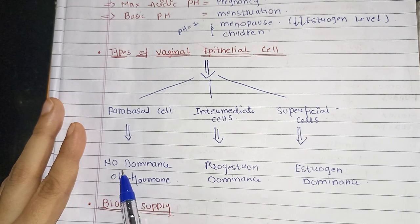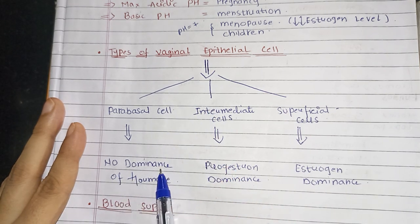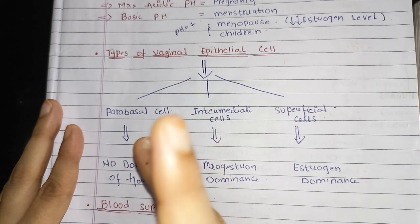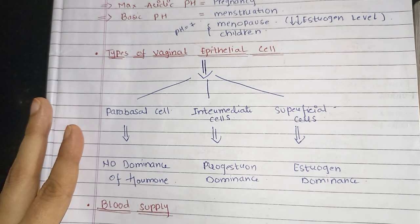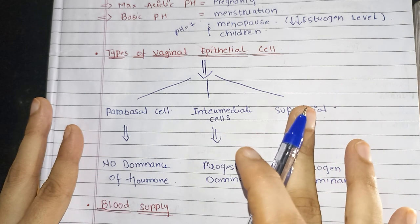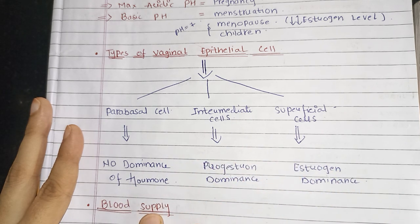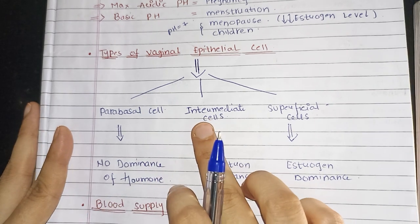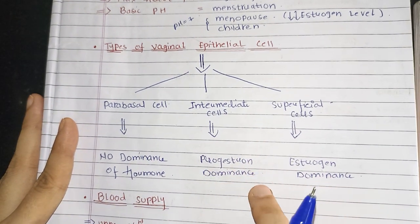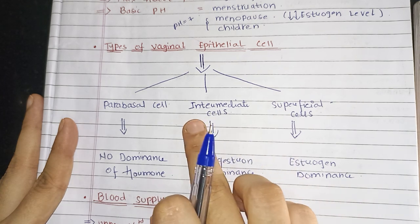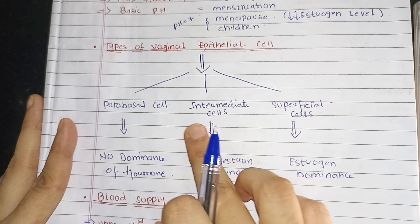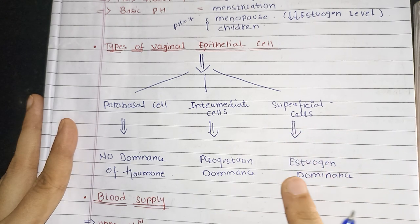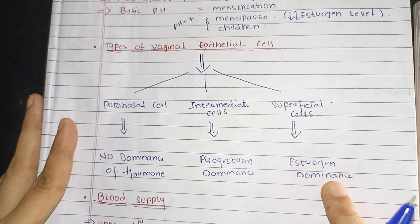Parabasal cells increase in number when there is no dominance of hormones — meaning when both progesterone level and estrogen level are equal, neither one is high nor low. Intermediate cells increase in number when there is progesterone dominance, that is when there is a high level of progesterone. Superficial cells will increase in number when there is estrogen dominance, that is when there is a high level of estrogen.